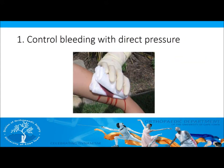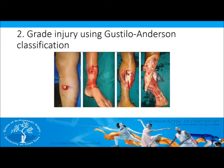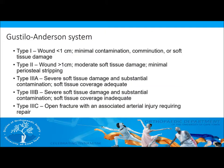You will need to control any bleeding by applying direct pressure and grade the injury using the Gustilo-Anderson classification. The Gustilo-Anderson classification uses the amount of energy, extent of the wound, and the contamination to grade the severity of the fracture into three types.